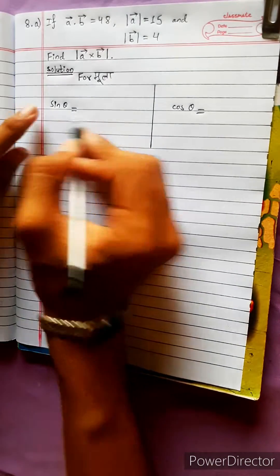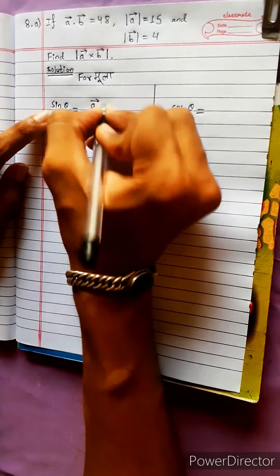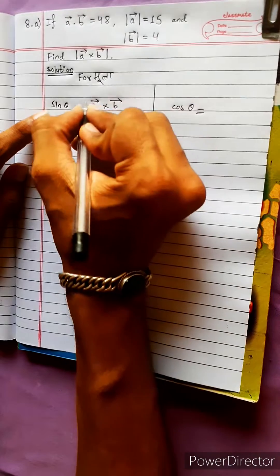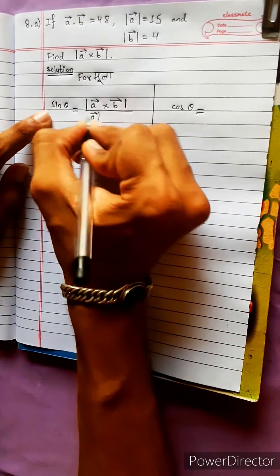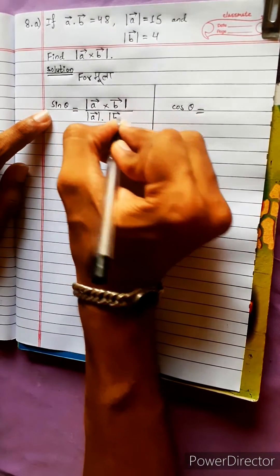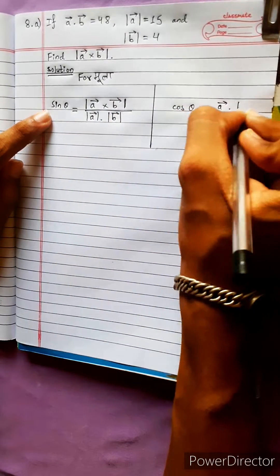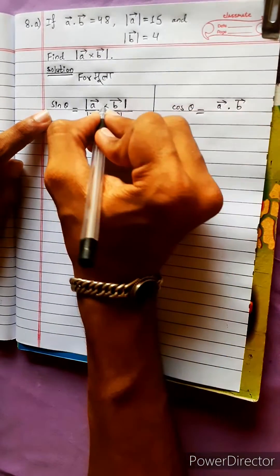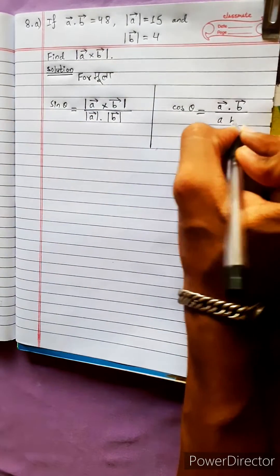The formula is: the magnitude of a vector cross product b vector, divided by the magnitude of a vector times the magnitude of b vector. This gives cos theta. The dot product of a vector and b vector equals the cross product divided by |a| times |b|.